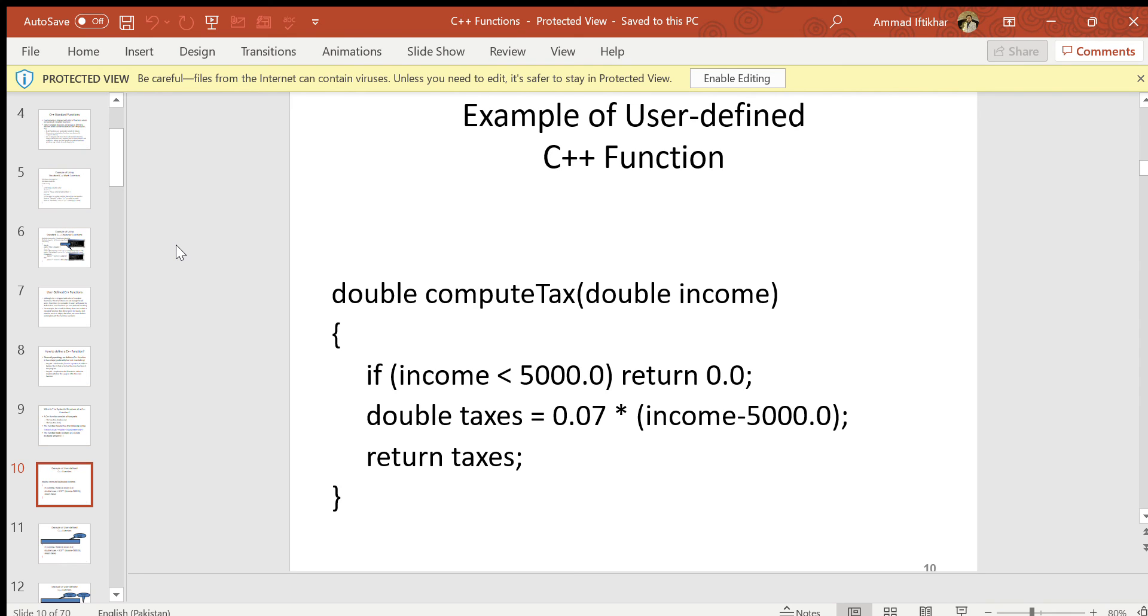The function gets the income value. If income is less than 5000, the return will be 0.0. If it's greater than 5000, then 7% tax will be deducted: taxes = 0.07 * (income - 5000.0), and return taxes.